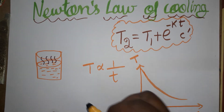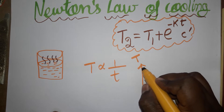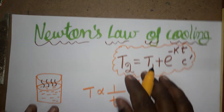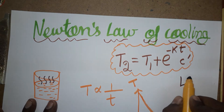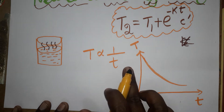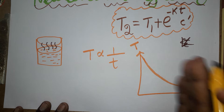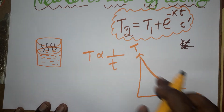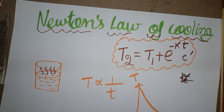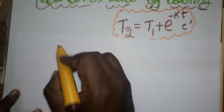When time increases, temperature is going to decrease — time and temperature are inversely proportional. When terms are inversely proportional, you can draw a graph like this. If directly proportional, you draw a straight line linear graph. The x-axis is time, the y-axis is temperature. When time increases, temperature decreases, so we draw a decreasing curve. Today we are going to derive this equation.